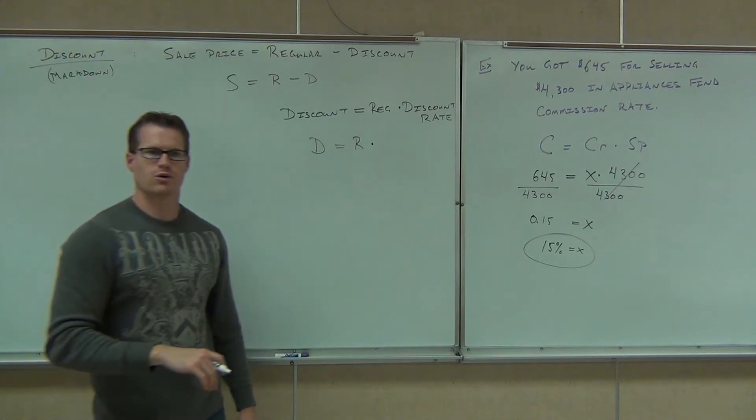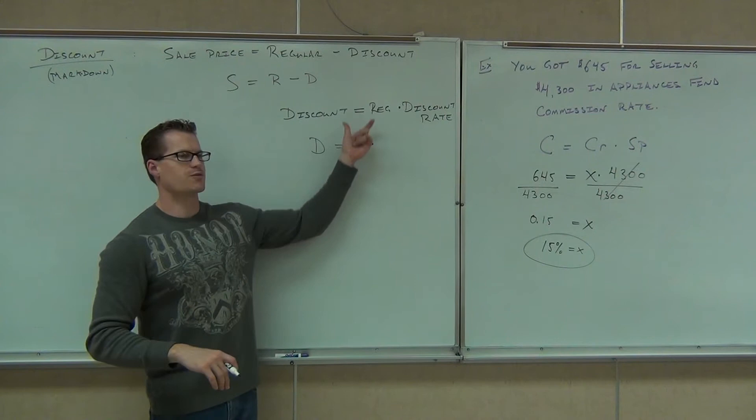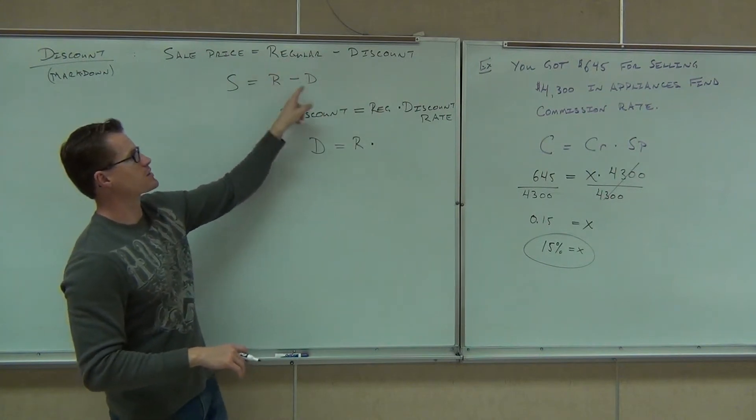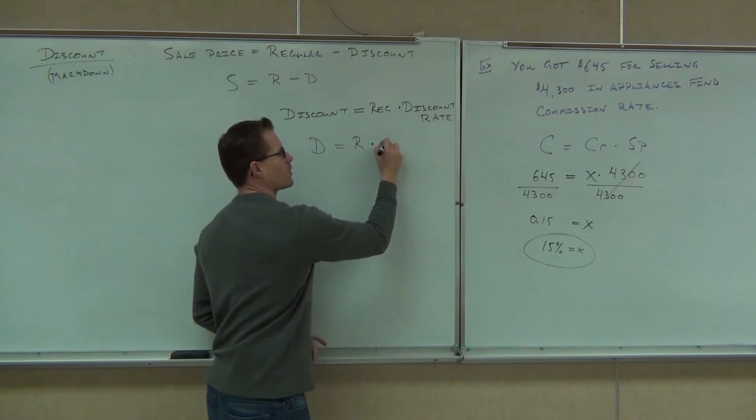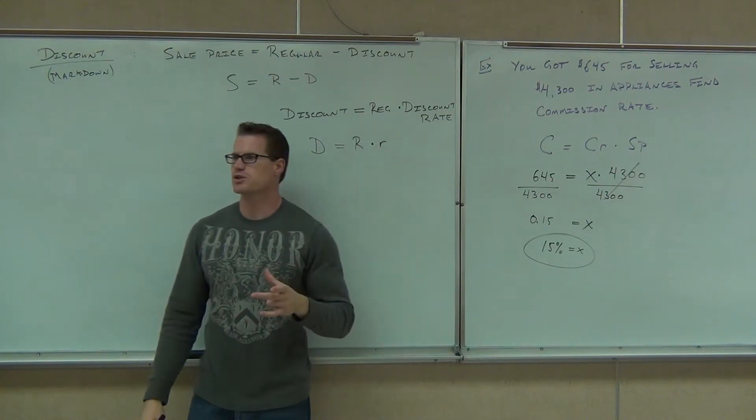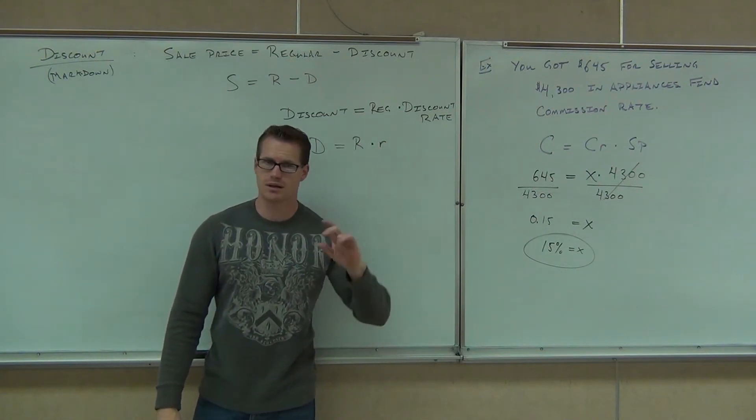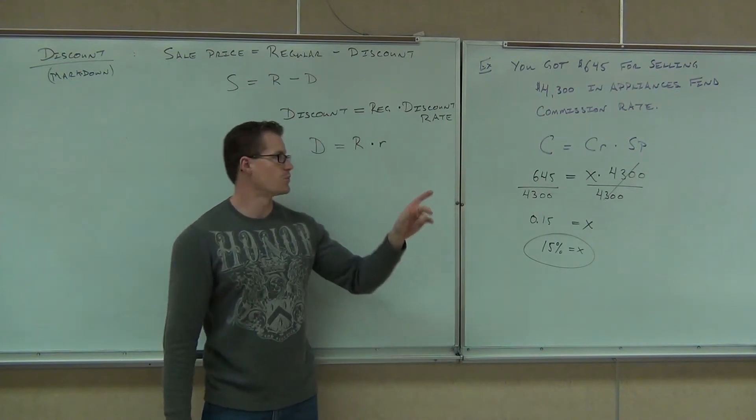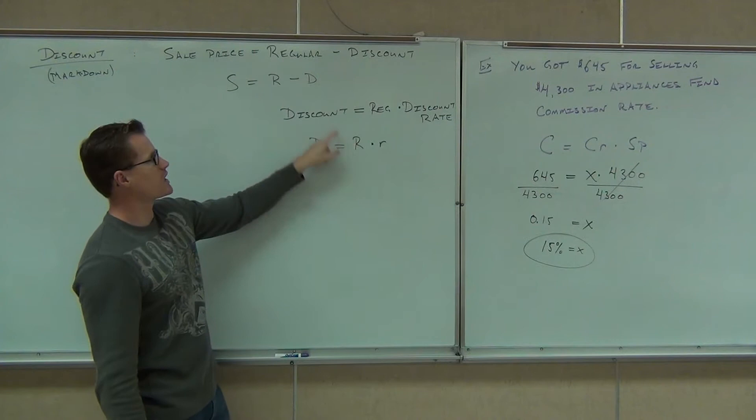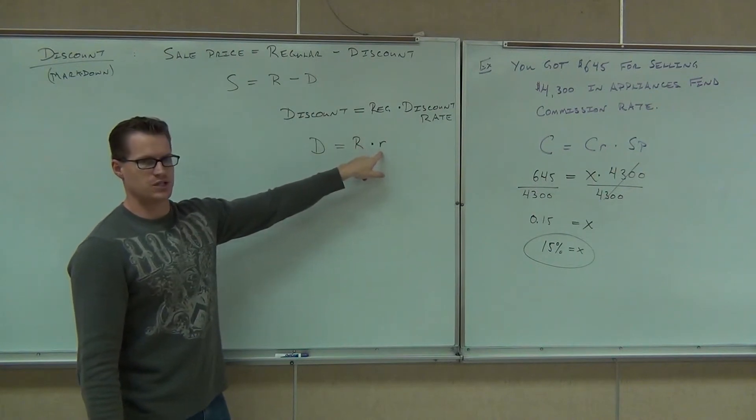Please look on the board here real quick. I'm going to use two different R's. Capital R is going to stand for the regular price item. Notice regular price, regular price at the same R. Discount rate, I'm going to use a little r. Usually a little r will stand for a rate of some sort. So that little r right there stands for the discount rate. Are you guys okay with that? So while these R's are the same, this R stands for discount rate.